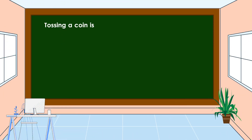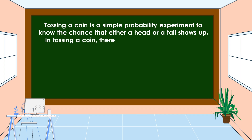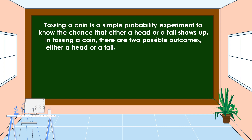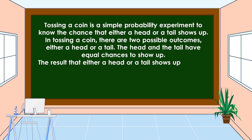Tossing a coin is a simple probability experiment. To know the chance that either a head or a tail shows up, in tossing a coin there are two possible outcomes: either a head or a tail. The head and the tail have equal chances to show up. The result that either a head or a tail shows up is called a success.